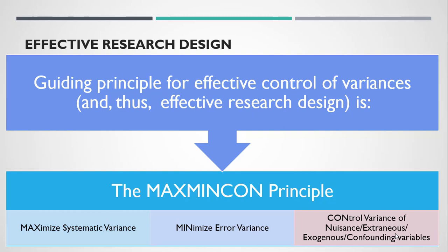How do we control for these variances? We use the MAXMINCON principle: you maximize the systematic variance, you minimize the error variance, and you control for the confounding variance. Keep this principle at the back of your mind as we proceed — more details will come in the next episode.